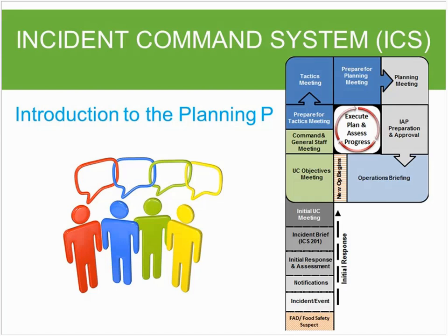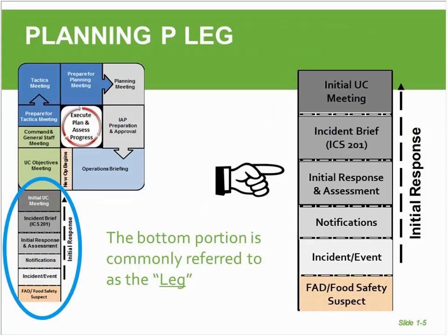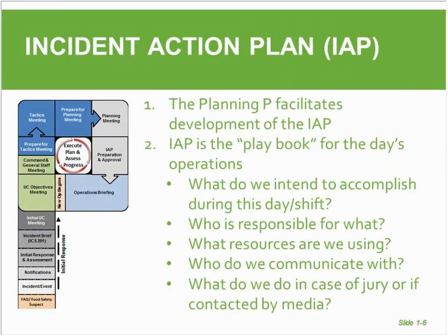The Planning P is a component of the Incident Command System, and it's a tool that's used to plan and manage an incident response from an incident command post. It is comprised of two parts — today we're going to focus on the leg of the P. The top part is the planning cycle, which is circular and continues. The Planning P was developed to facilitate development of the Incident Action Plan, which is compiled and produced by the planning section with input from other sections and units assigned to the incident.